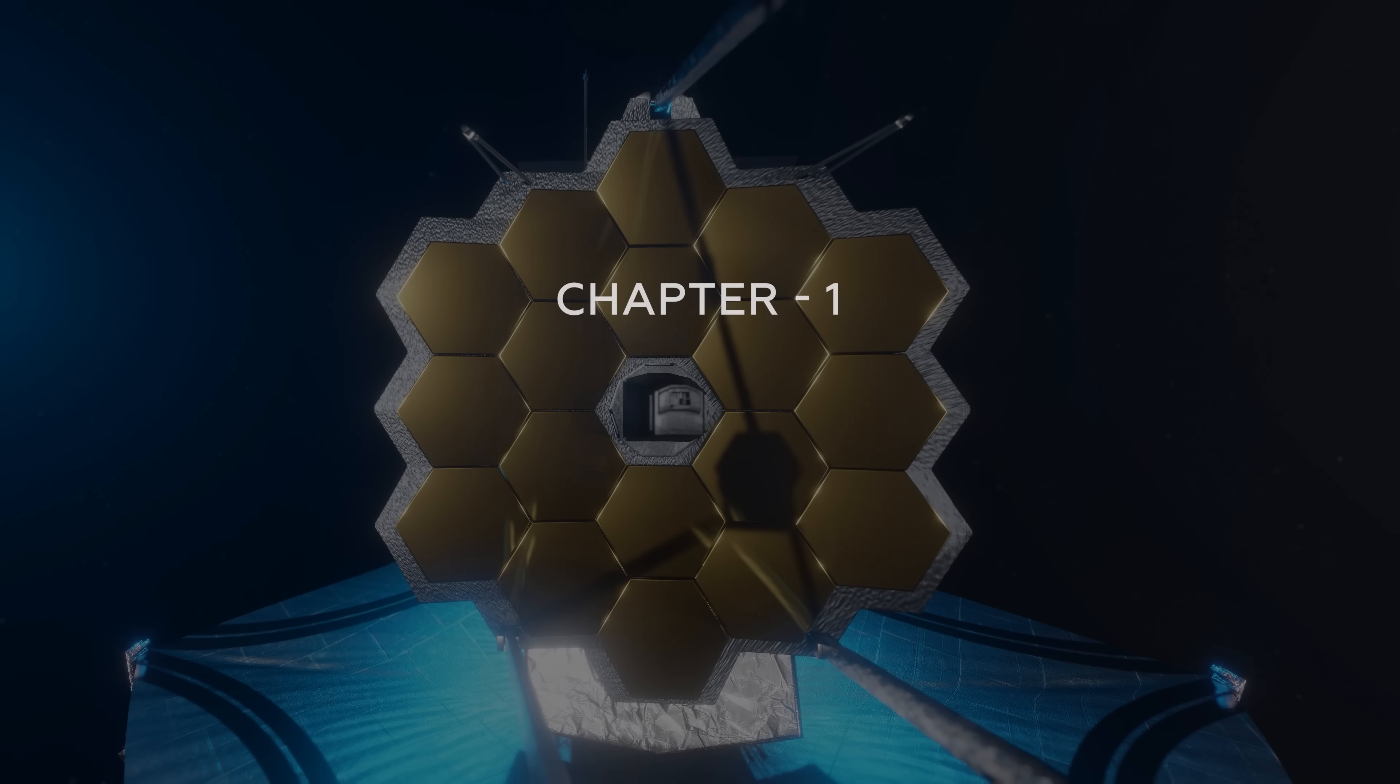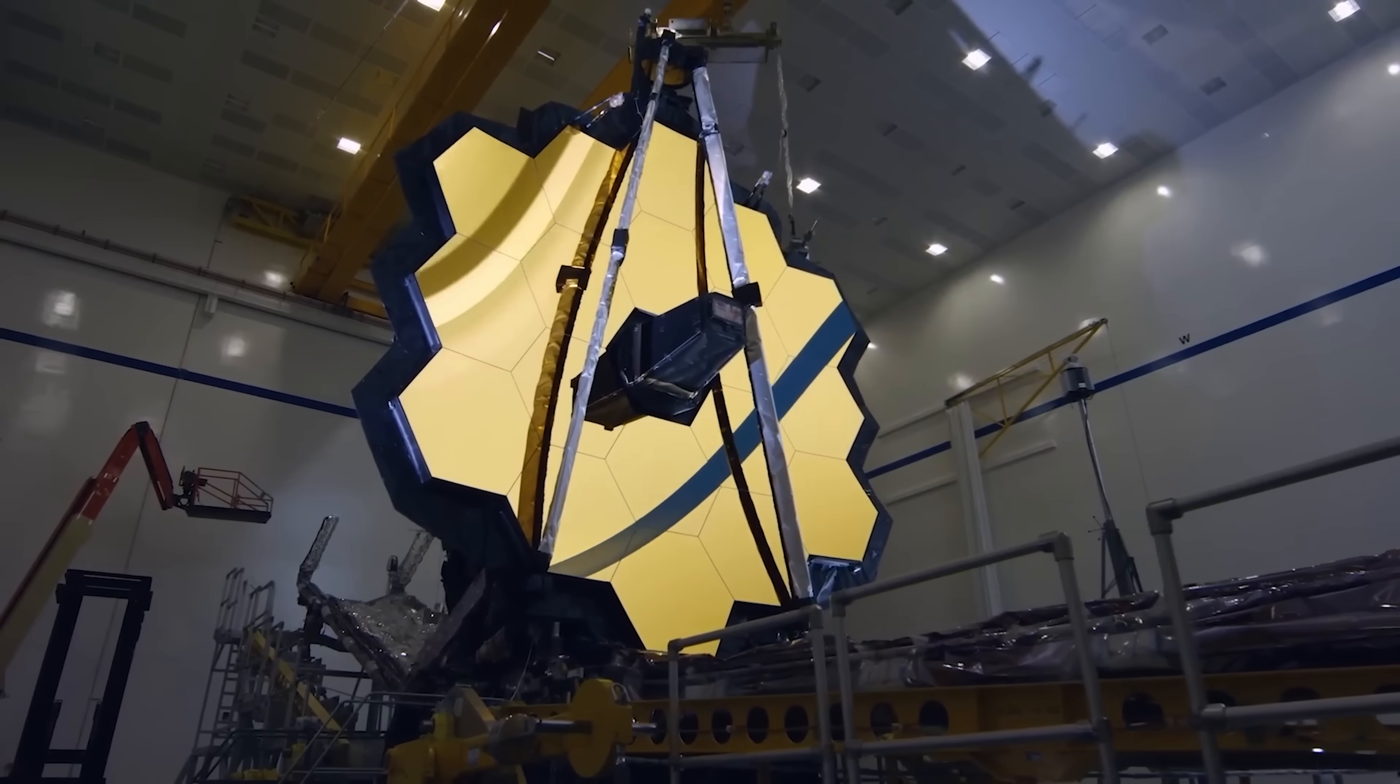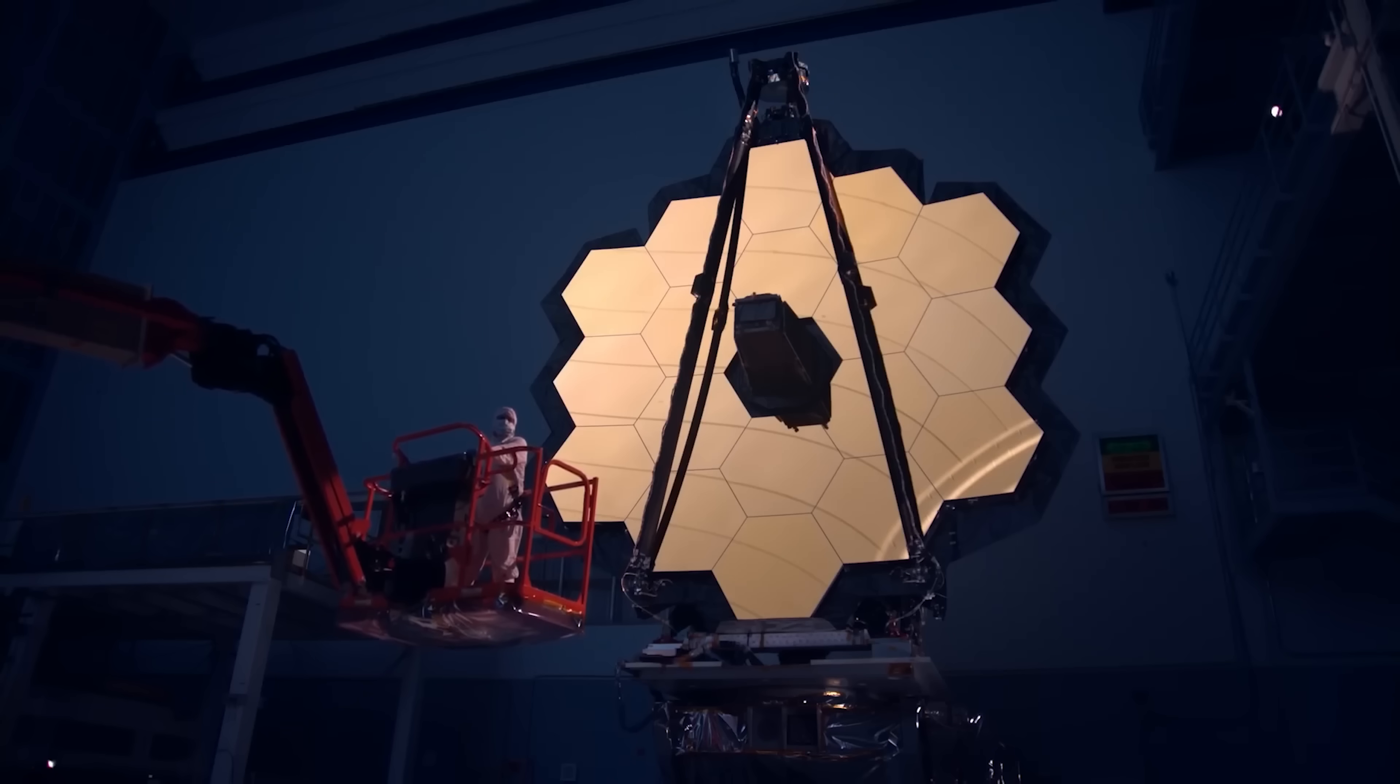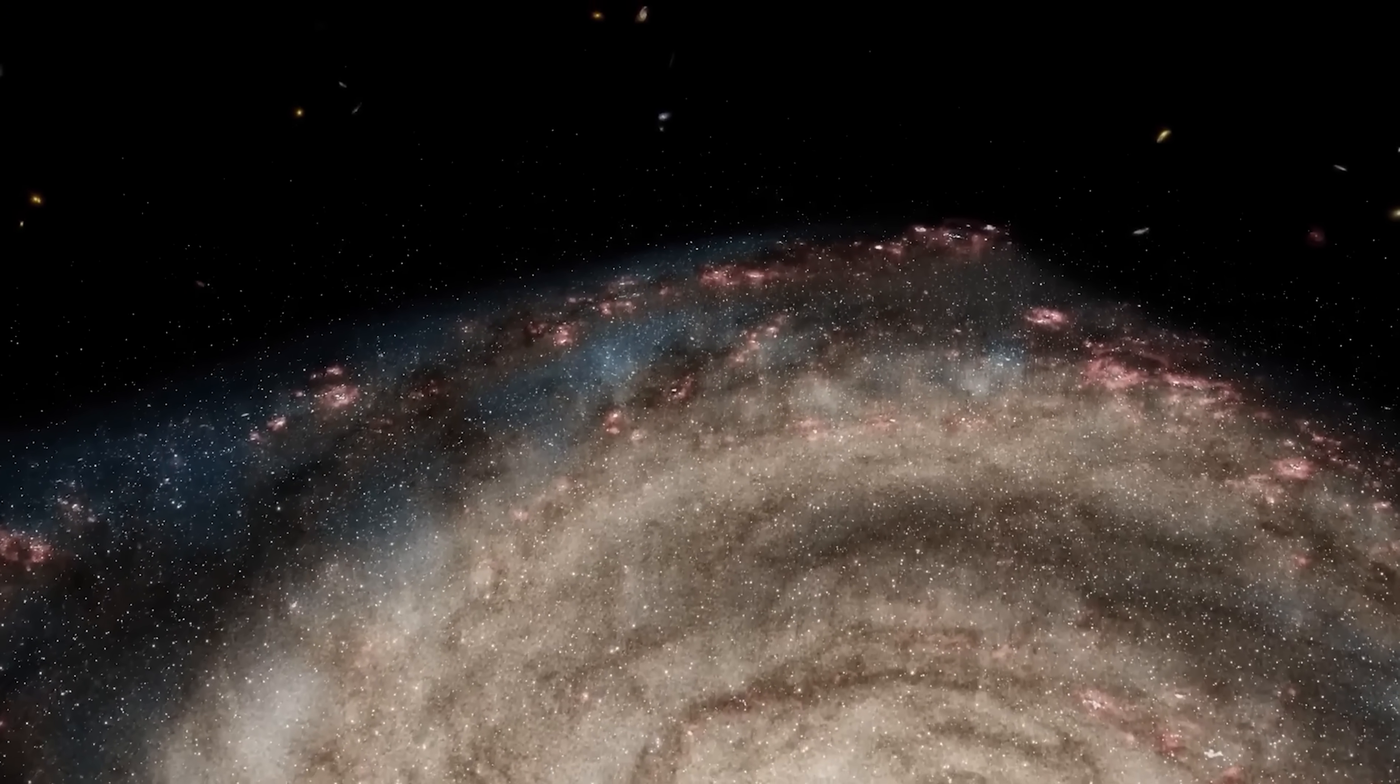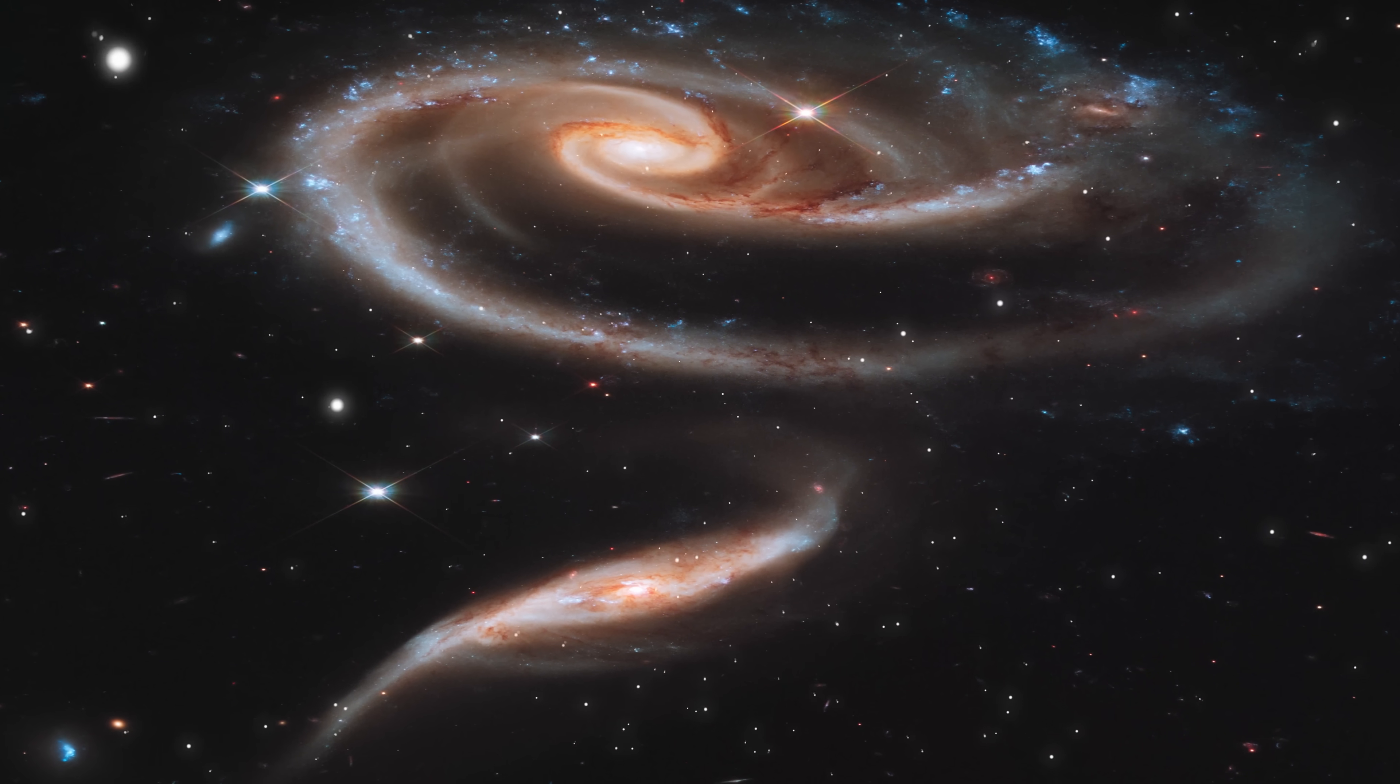Chapter 1. Galaxies that defy time. Picture yourself holding the ultimate time machine. Not some sci-fi device, but an actual photograph from the James Webb Space Telescope. The image shows what looks like a modern spiral galaxy with elegant arms swirling around a bright core. Now imagine being told this galaxy existed when the universe was just 2% of its current age. That's like finding a fully formed adult in a photograph of the maternity ward.